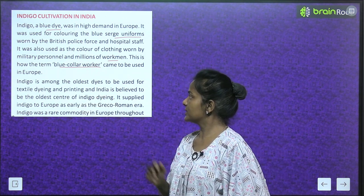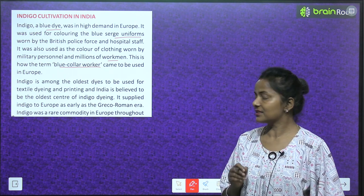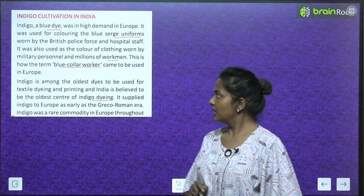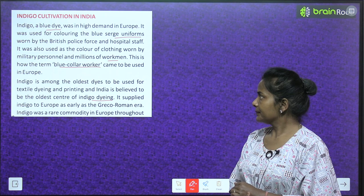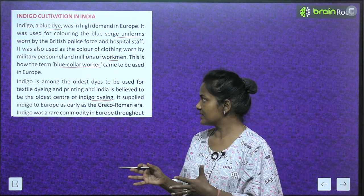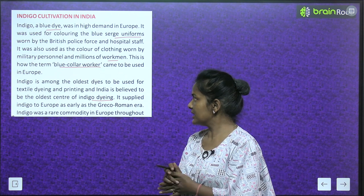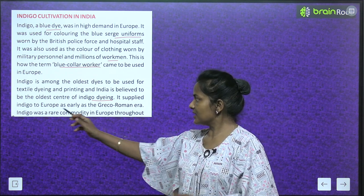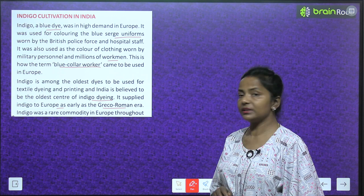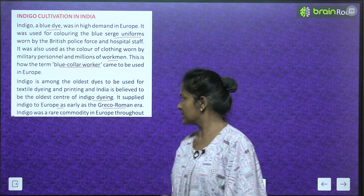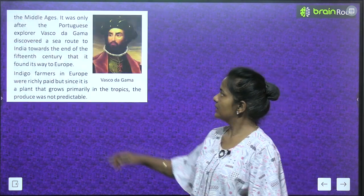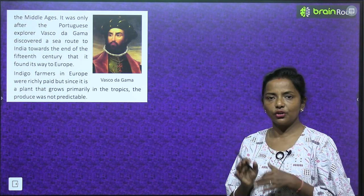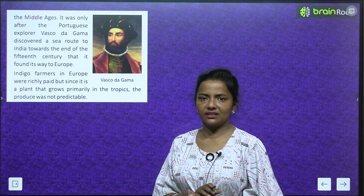Indigo is almost the oldest dye used for textile dyeing and printing, and India is believed to be the oldest center of indigo dyeing. India supplied indigo to Europe as early as the Greco-Roman era. However, indigo was a rare commodity in Europe throughout the Middle Ages, as it was difficult to obtain.